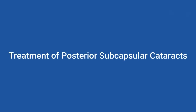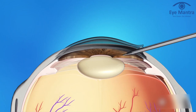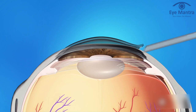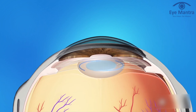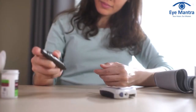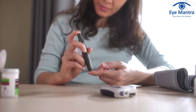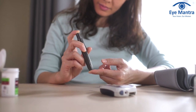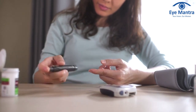Regarding treatment of posterior subcapsular cataract — as with all types of cataract, the only treatment is surgery. Surgery involves removing the clouded lens from your eye and replacing it with an artificial lens. The surgery is relatively quick and most patients are able to see clearly again within a few days of the procedure. However, you can take some actions to prevent it — for example, if you have diabetes, it is important to keep your blood sugar levels under control, which will help to prevent cataract from developing and progressing.